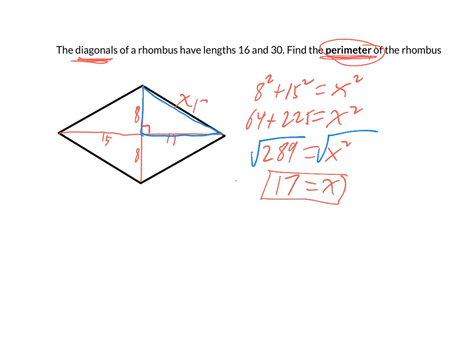So if each side is 17, then the perimeter is 17 times 4, which is 68. And that is that. Hope this was helpful. Thanks.